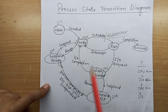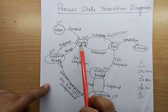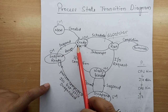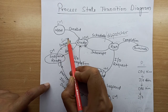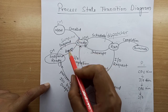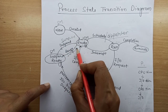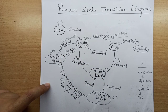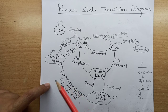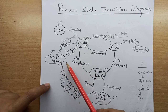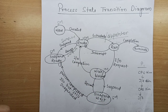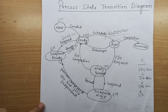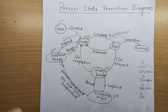When a process is moved from main memory to secondary memory, this is called swap out. When it is brought back to main memory, this is called swap in. This overall process is called swapping — swapping out processes from main memory to secondary memory and swapping them back in when space becomes available.